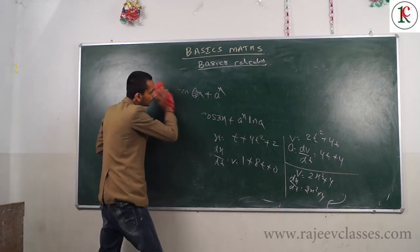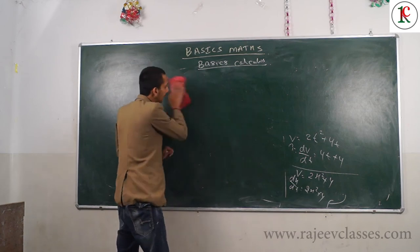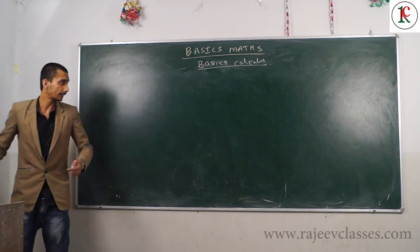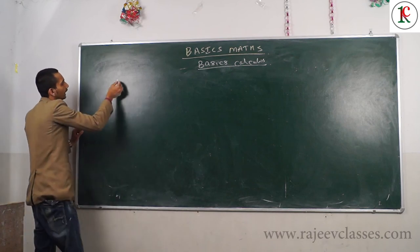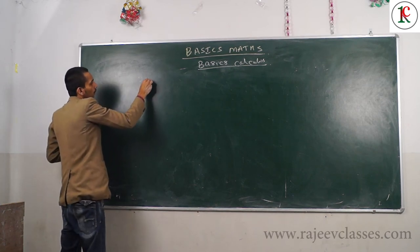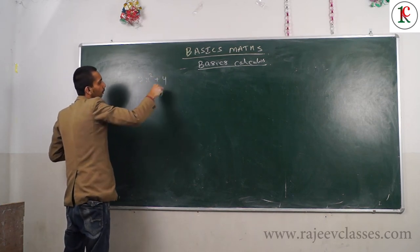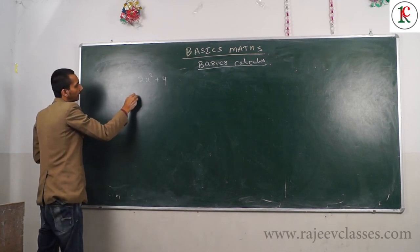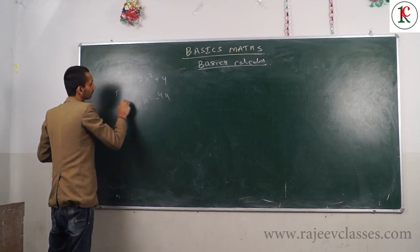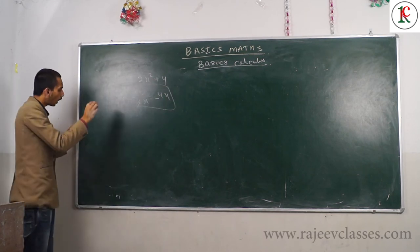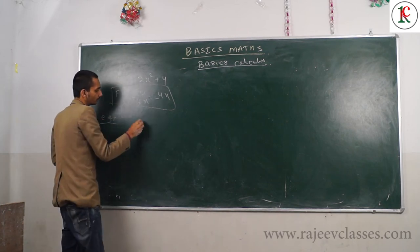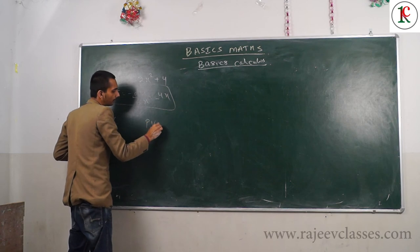If potential energy U is given as 2X squared plus 4, then force equals minus dU/dX, which gives minus 4X. This is how differentiation is used - to find position from velocity, to find velocity from position by differentiating.